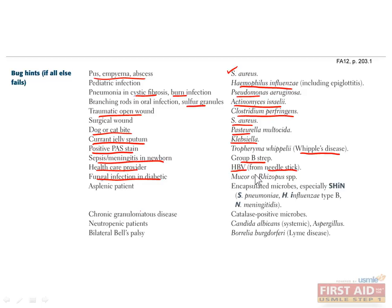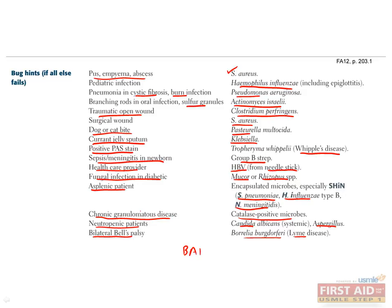Fungal infections in diabetics can be caused by Mucor or Rhizopus infections. If you encounter an asplenic patient, keep the SHiN bacteria in mind: Strep pneumoniae, H. flu type B, and Neisseria meningitidis. Chronic granulomatous disease can be caused by catalase-positive microbes. Neutropenic patients are susceptible to Candida infections and Aspergillus. If you see a patient with bilateral Bell's palsy, think about Lyme disease or Borrelia burgdorferi. Remember the mnemonic BAKE A KEYLINE PIE, which stands for Bell's palsy, arthritis, cardiac block, and erythema migrans — all of which can be caused by Borrelia burgdorferi.